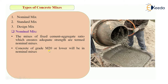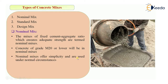Concrete of grade M20 or lower will be in the category of nominal mixes — for example, M20, M15, M10, M7.5, and M5. Nominal mixes offer simplicity and are used under normal conditions. If there is no special hot weather concreting, no chemical attacks or sulfate attacks, and conditions are very normal, we can use nominal mixes.